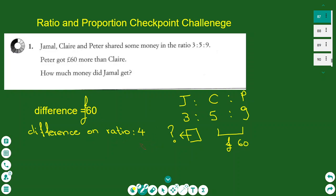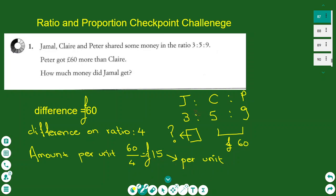Dividing the difference of money by the units, I can find how much money corresponds per one unit. Doing the division, 60 divided by 4 gives us £15. So every one unit is £15 per unit. Now I can answer the question: £15 per unit, and Jamal has 3 units, so Jamal got 3 times £15, which is £45. This is the answer.